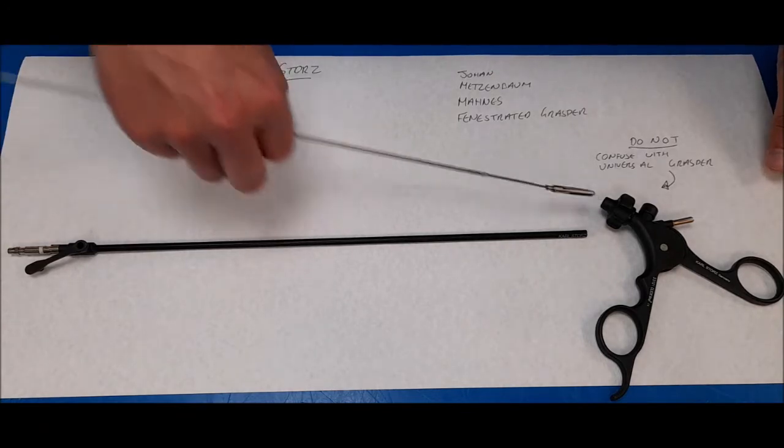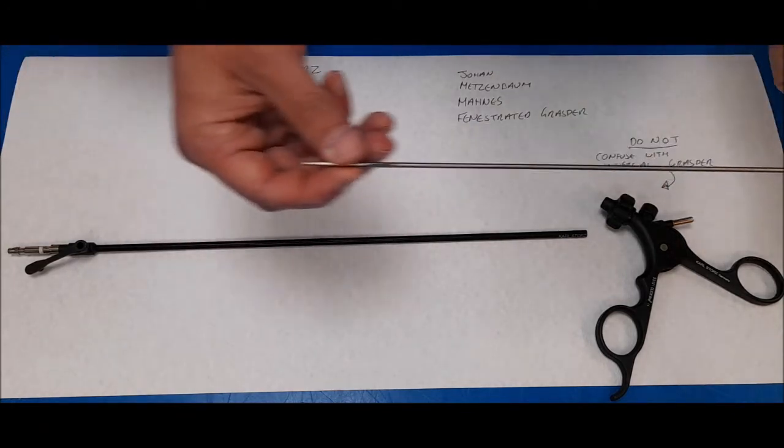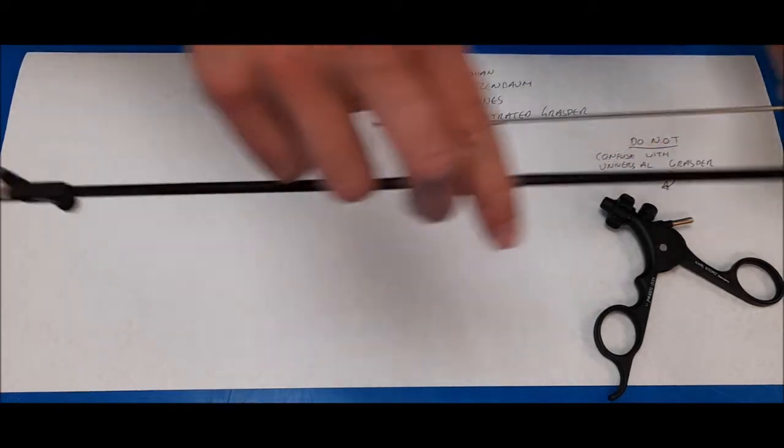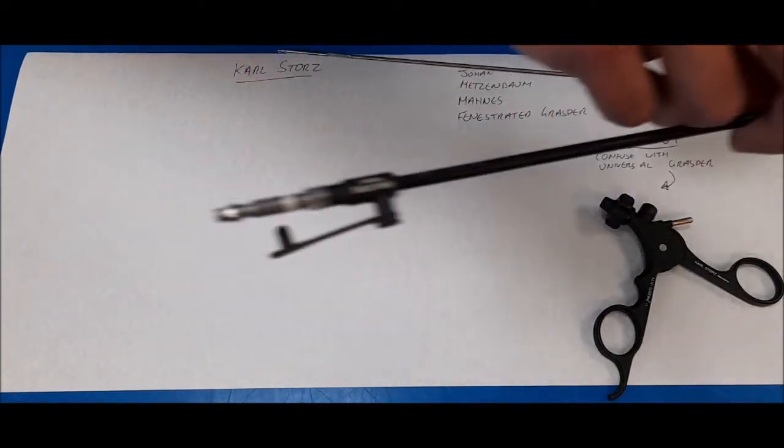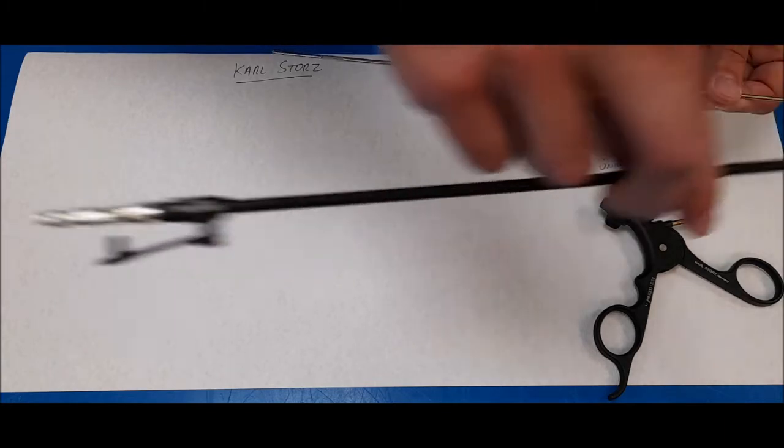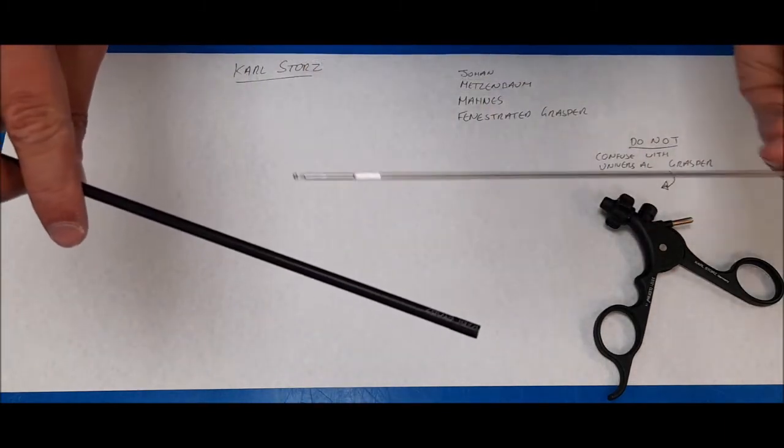To begin with, you will pick up the insert and the black sheath. This end is the connection end to the handle, and this end is what slides over the insert.